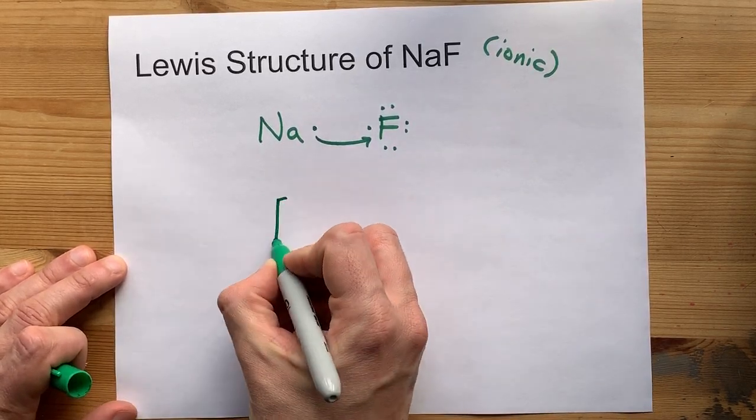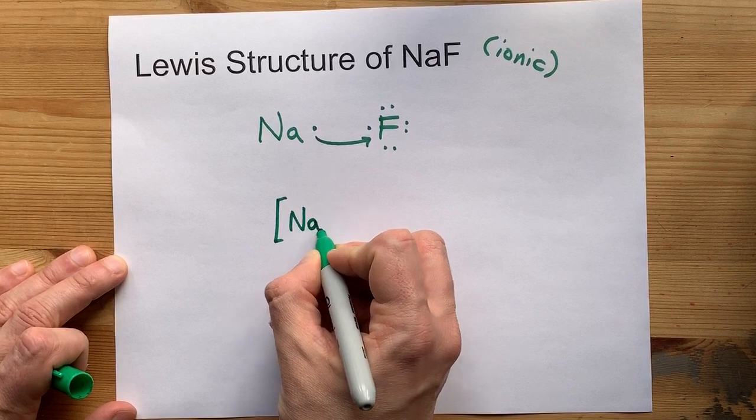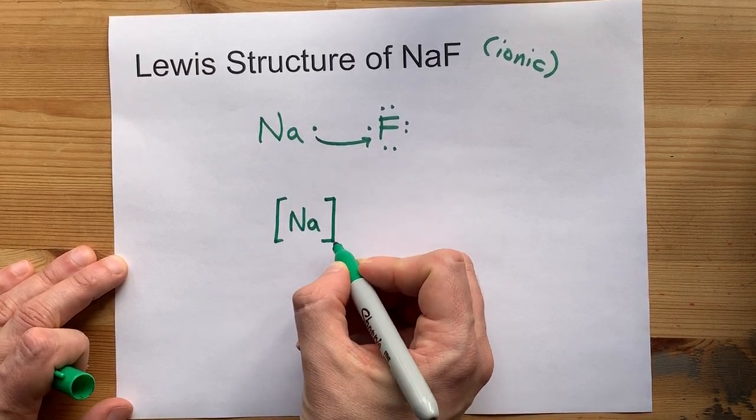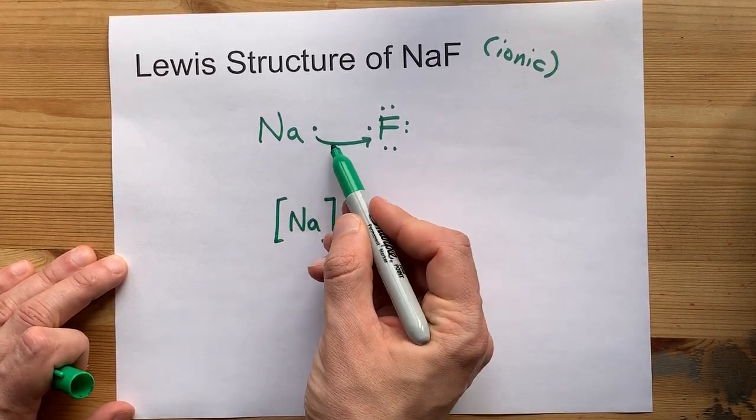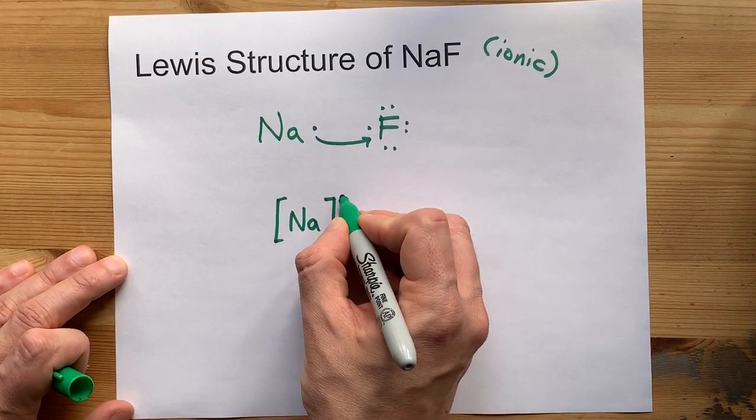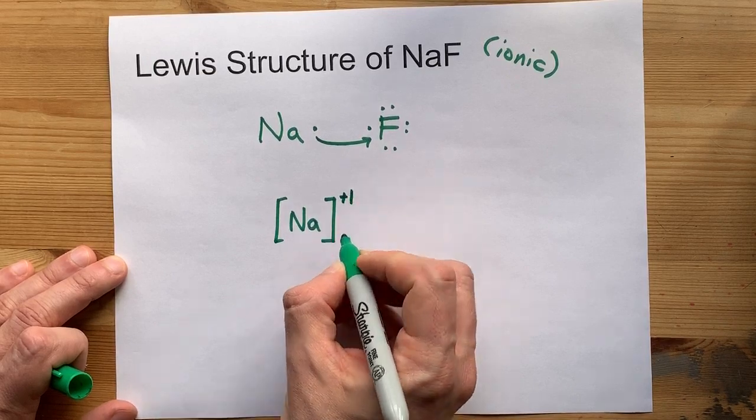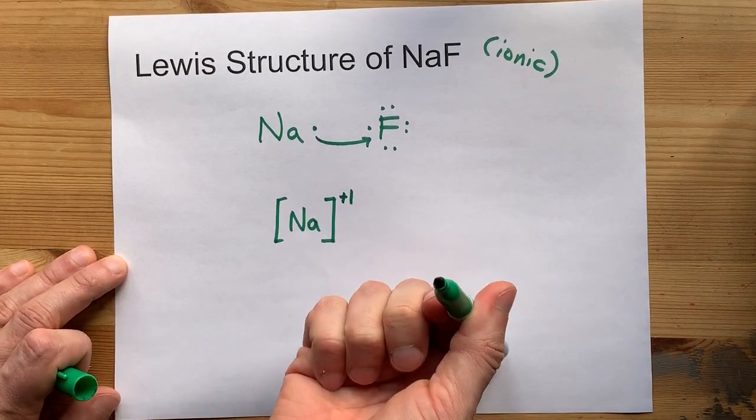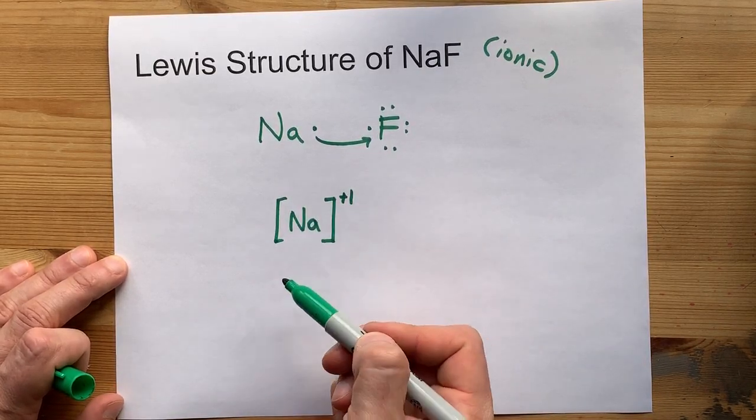Na will have lost its electron, so I'm going to draw it without any dots. Because electrons moved from one place to another, I have to put square brackets around it and say what its new charge is. Because it lost an electron, it gets a plus one charge.